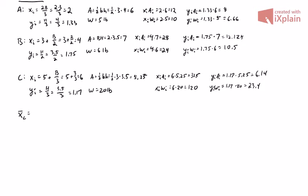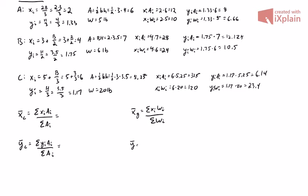The final equations we need: the x position of the centroid is the sum of x times A's over the sum of areas. The y position of the centroid is the sum of y times A's over the sum of areas. The x position of the center of gravity is the sum of x times W's over the sum of weights. The y position of the center of gravity is the sum of y times W's over the sum of weights.